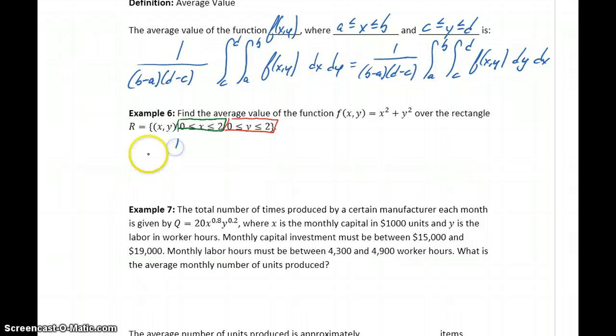Our integral in this case would be 1 over (2-0) times (2-0), integrating from 0 to 2, from 0 to 2. In this case, the order of integration doesn't make a difference since we have the same values: x²+y² dx dy.